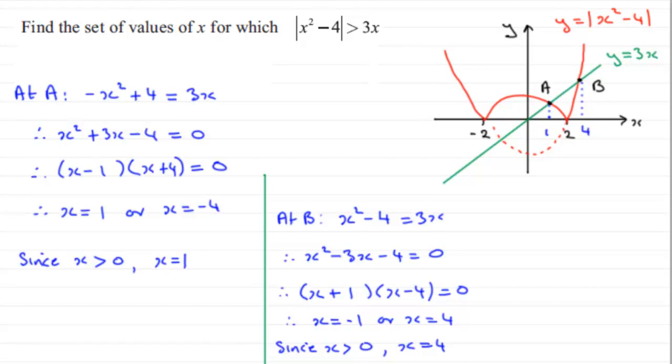So we're looking then for where the red graph is above the green graph. And I said at the beginning of the video that this is where x is less than this value, which will be x is less than 1. And it'll be more than this value here, 4. So if we just write out our solution, we'll just recap on the question.